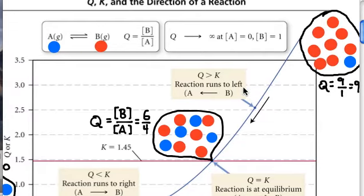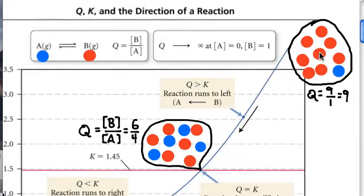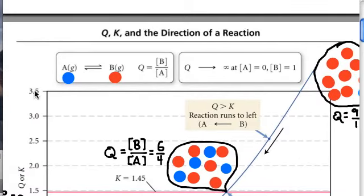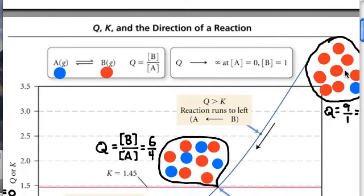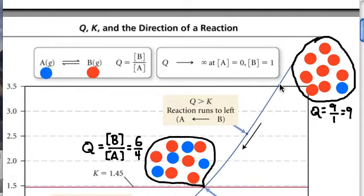B will tend to make more A, and the red will tend to make more blue until the constant falls from 9. This little picture doesn't really match this over here, but that's all right. Imagine this is a little bit higher up on the curve, but that 9 will shrink. 8.9, 8.8, 8.7, and everything in between until that quotient Q falls down to equal the constant at 1.45 or 1.5 if you round it.